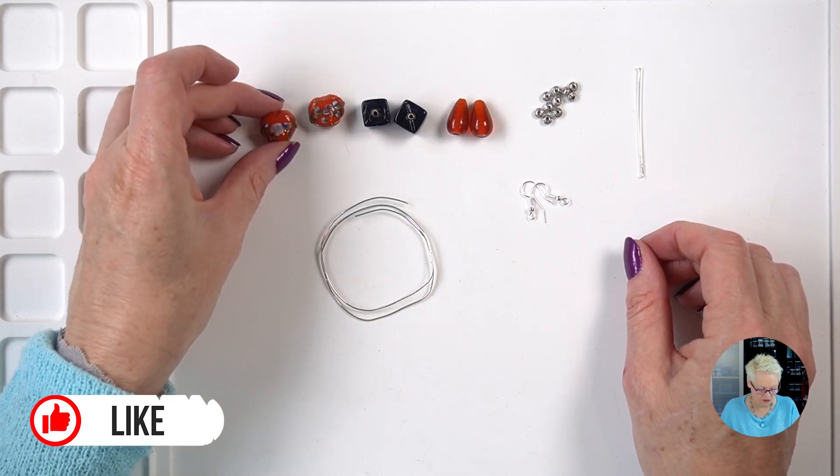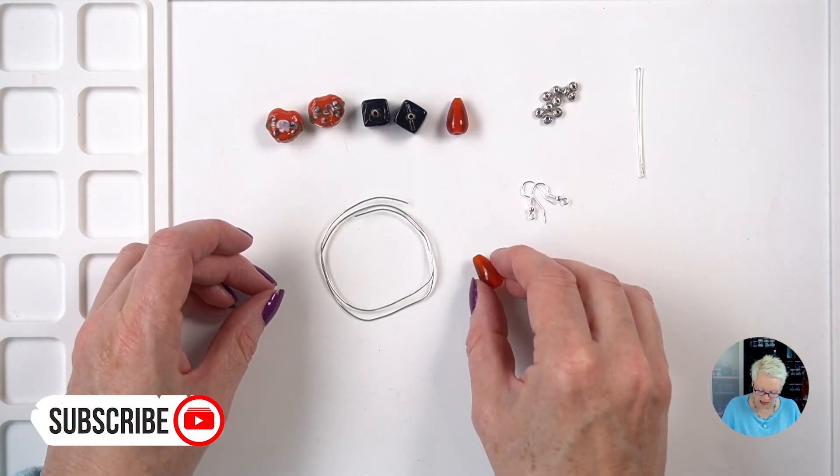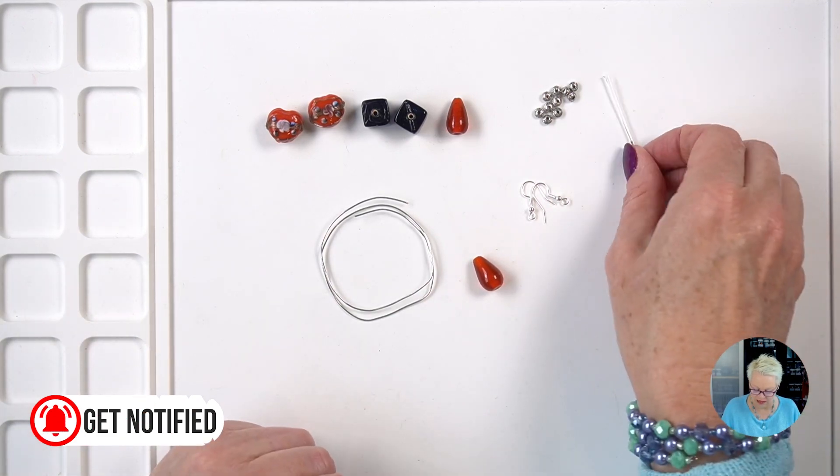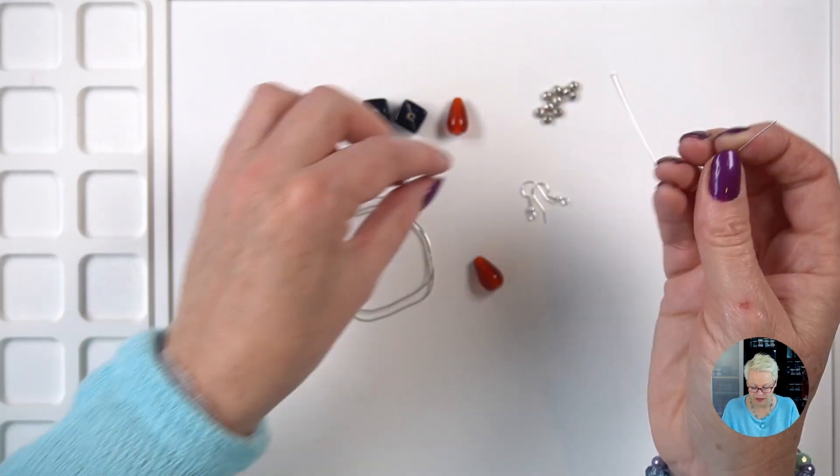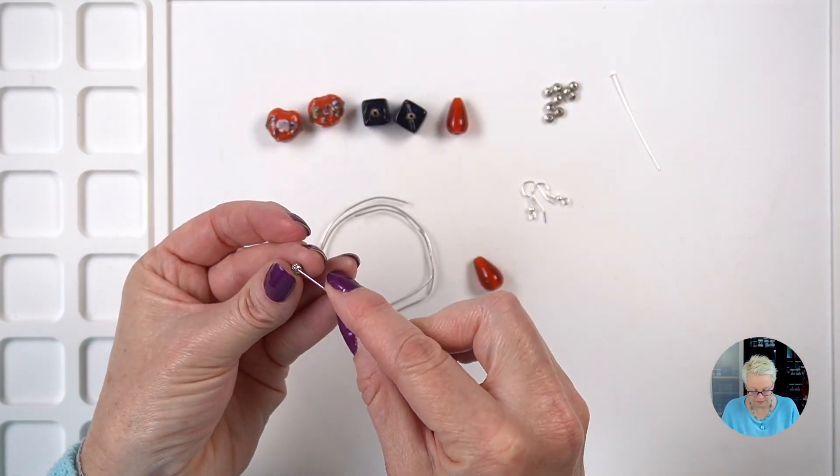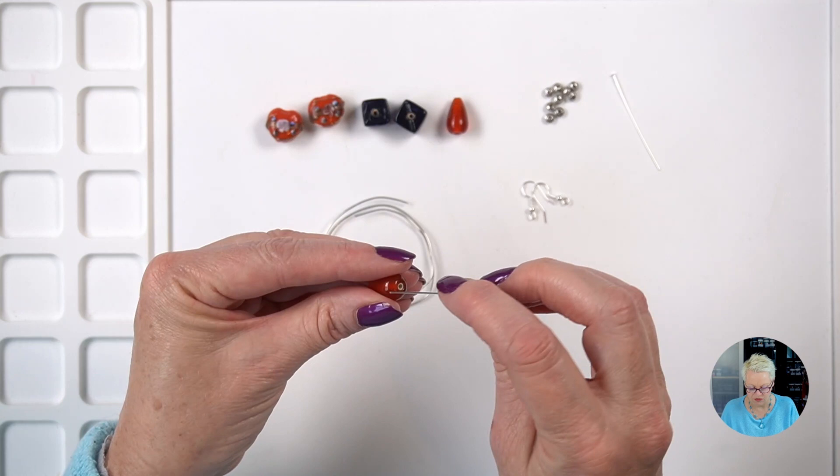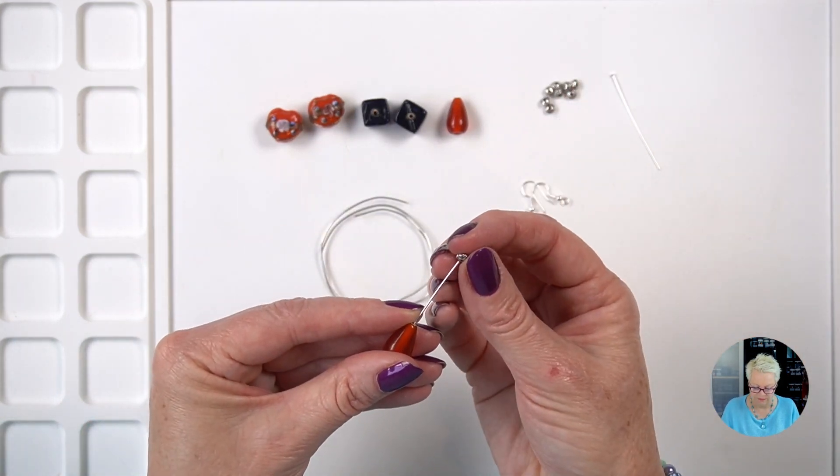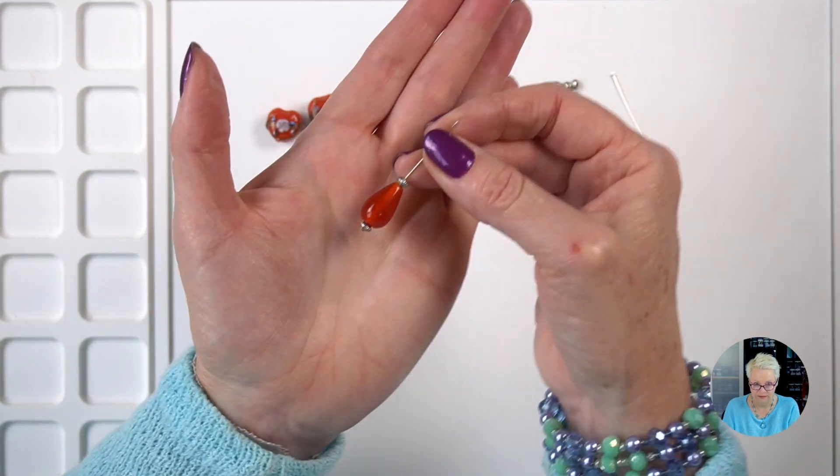So the first thing I'm going to do is I'm going to take the teardrop and I'm going to make a dangle for the bottom of the earrings. So I'm going to take my head pin and I'm going to feed on one of my rondelles, and my teardrop, and then another rondelle. Just like that.